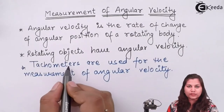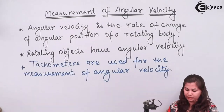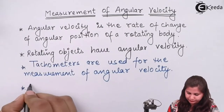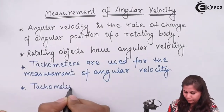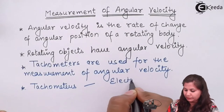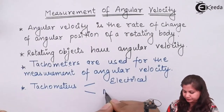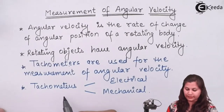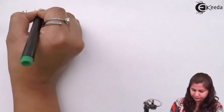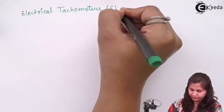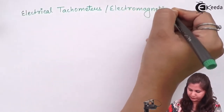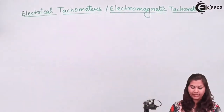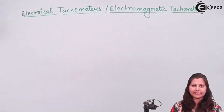Tachometers are the transducers which are used for the measurement of angular velocity. These tachometers can be electrical type or mechanical type. The electrical tachometers, also called electromagnetic tachometers, are of two types: the DC tachometer and the AC tachometer.